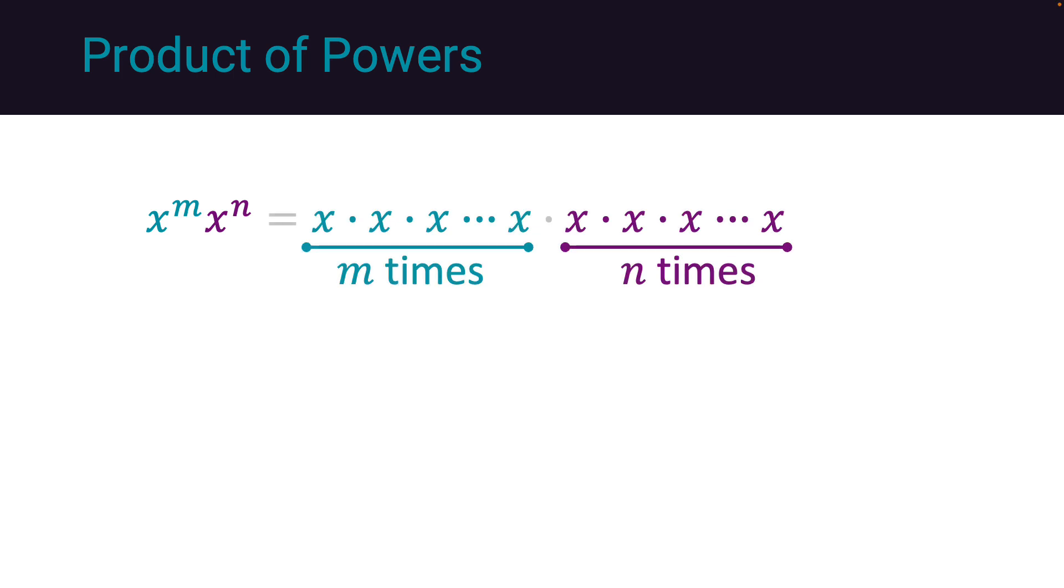we have x multiplied m times in blue and x multiplied n times in purple, totaling m plus n x's. This can be written as x to the power of m plus n.